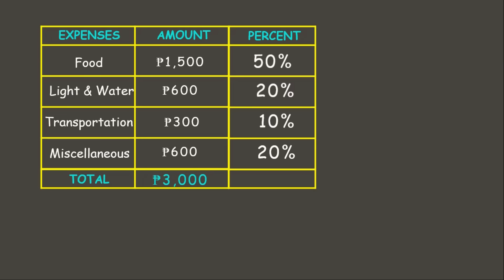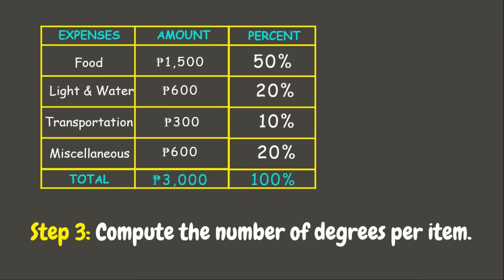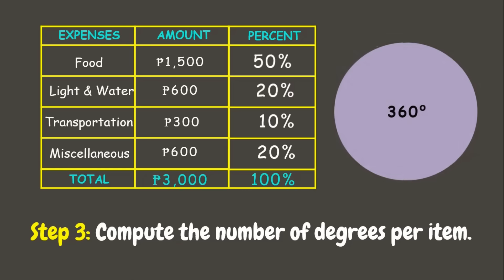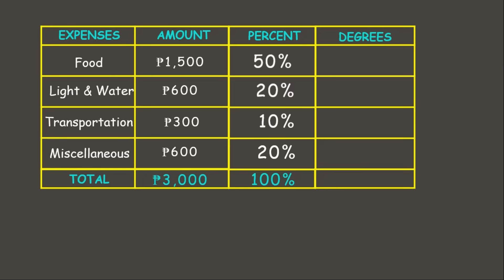The third step is to compute the number of degrees per item. This is to determine how to accurately cut or divide the circle. We know that a circle has 360 degrees, and to get the degrees for each item we simply multiply 360 degrees by the percent of each item.